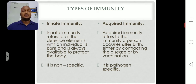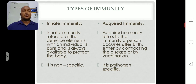In our body, there are majorly two different types of immunity: innate immunity and acquired immunity. So what is meant by innate immunity? Innate immunity refers to all the defense elements with which an individual is born, and is always available to protect the body.